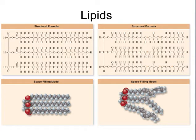So saturated fats will tend to be more solid, such as butter, compared to unsaturated fats such as oils, which are more fluid. This will be very important when we look at the structure of the cell membrane, because cell membranes can regulate the fluidity of the membrane by adding more unsaturated bonds to make it more fluid, or by saturating their bonds to make them more rigid.